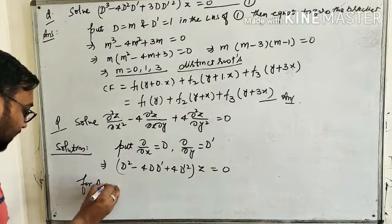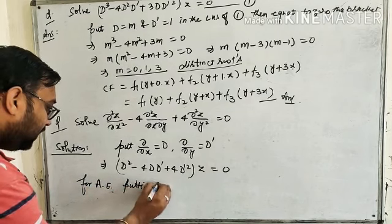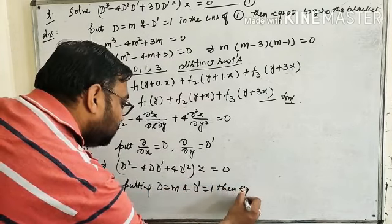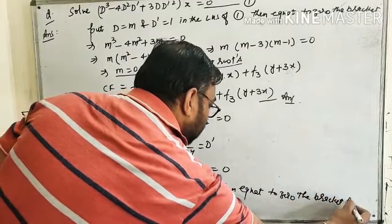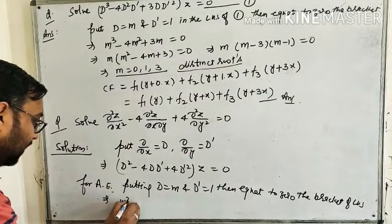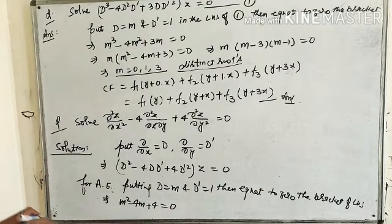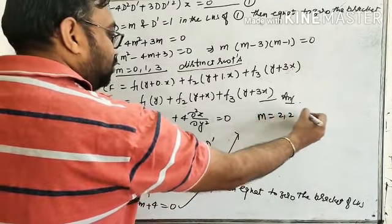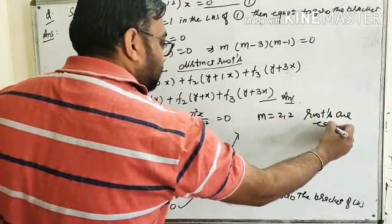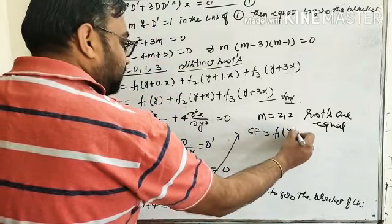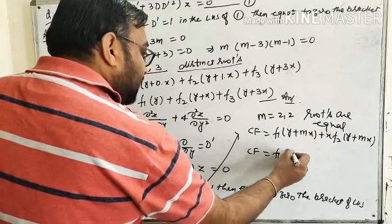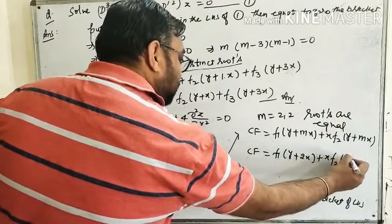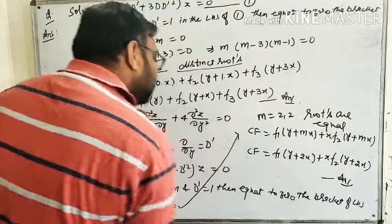For the auxiliary equation, put D = m and D' = 1, then equate to zero: m² - 4m + 4 = 0. This is a quadratic equation. Factoring gives (m - 2)² = 0, so m = 2 is a repeated root. Applying Case 2, CF = f₁(y + 2x) + x·f₂(y + 2x). This is the complete solution.